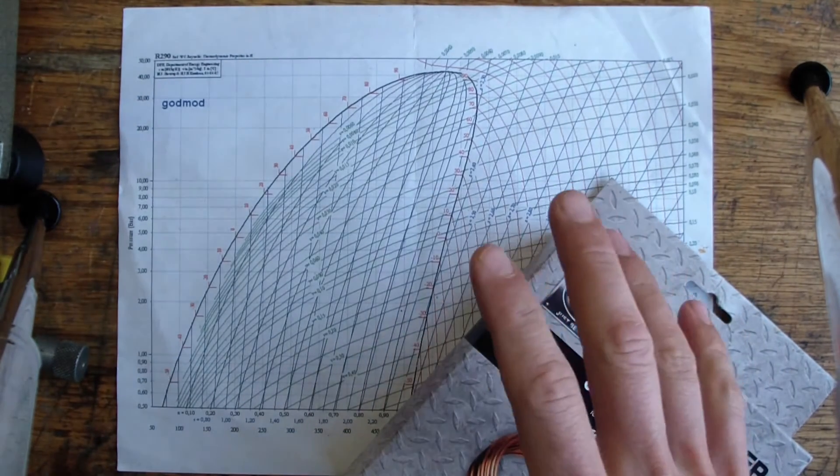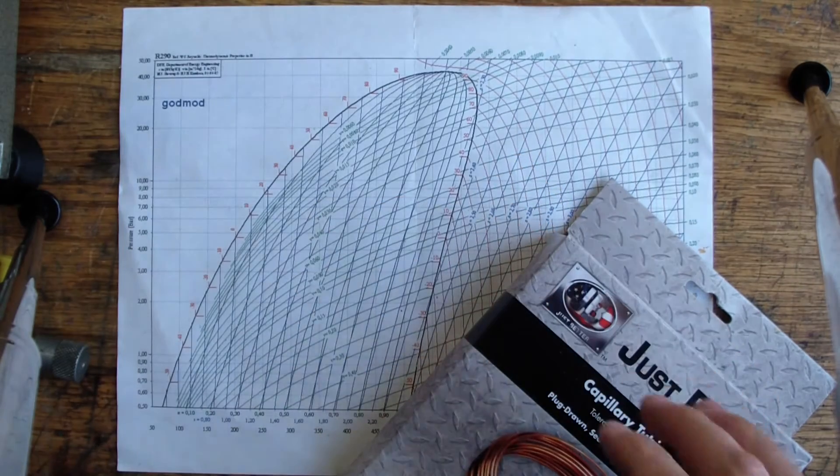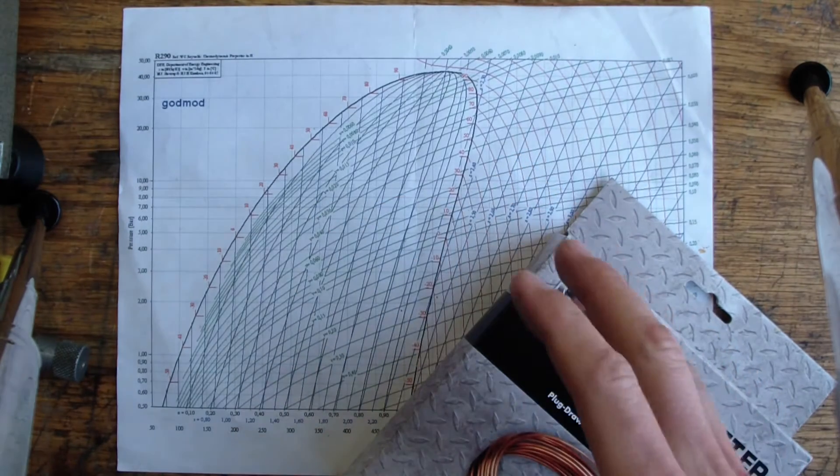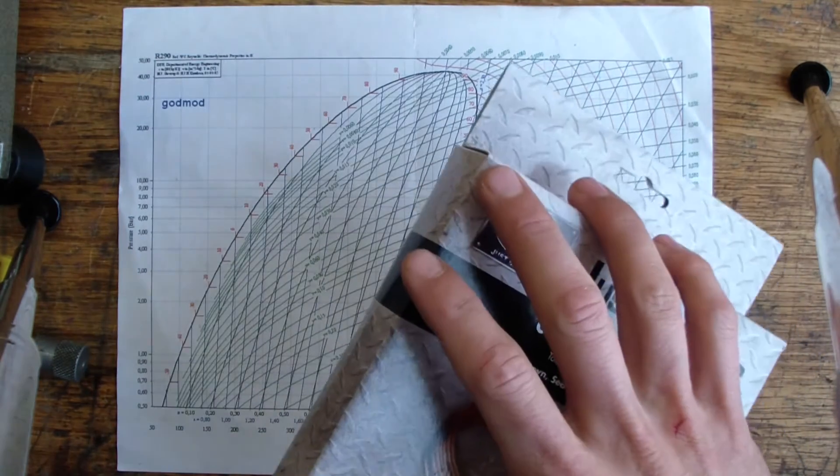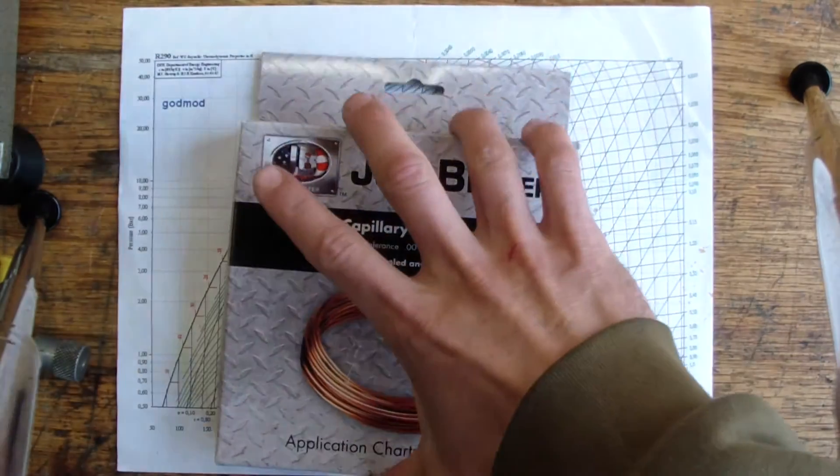High side float worked on basically the same principle, but the exact opposite worked on the high side and kind of regulated the sub cooling in the high side. So a well-designed system worked great.